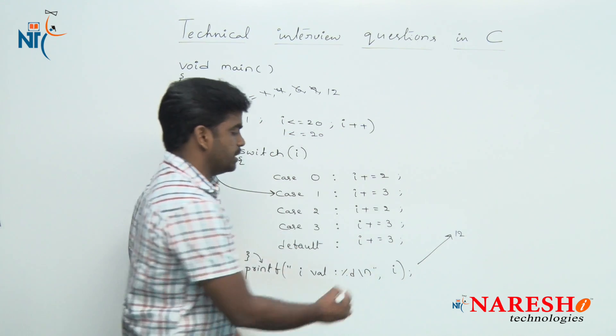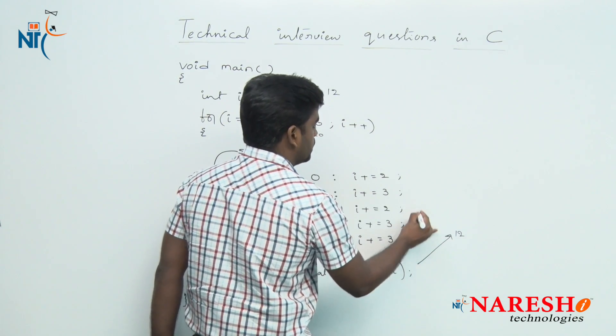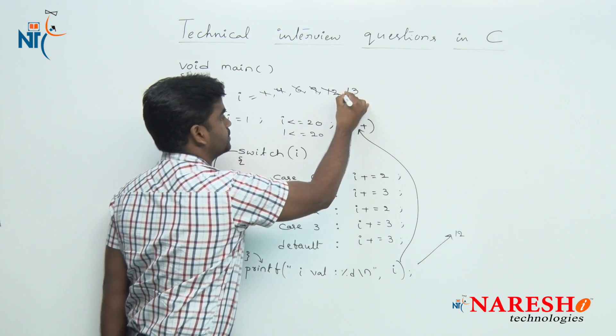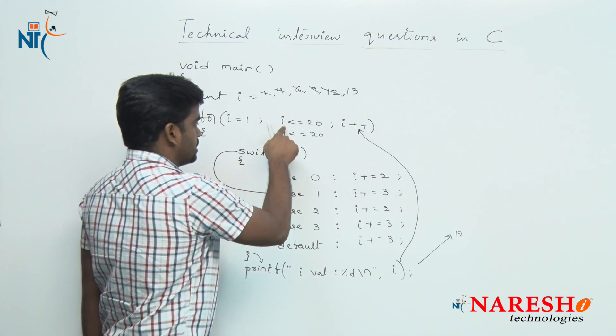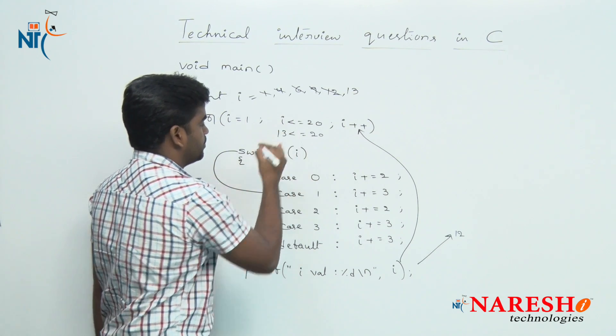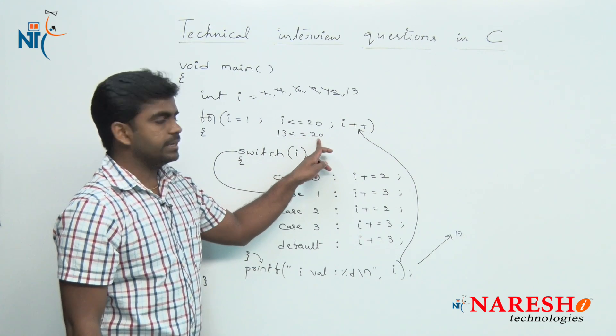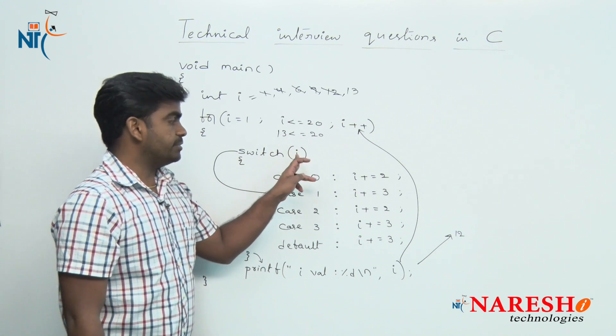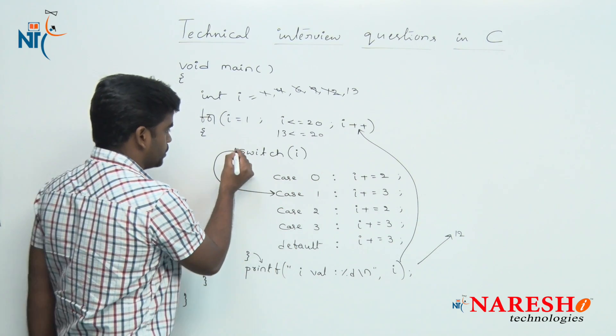i plus plus. From here the control will move to here, i plus plus. i value becomes 13. It will substitute the value 13 here. 13 is less than or equals to 20, the condition is true. Move inside switch of 13, there is no 13th case here.